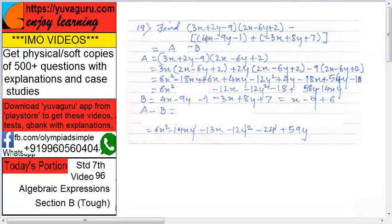Solve the inner brackets. There is a plus sign over here, so there won't be any difficulty. All the signs would remain same as there. So 4x minus 9y minus 1, same.